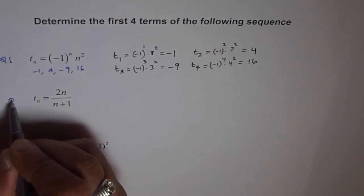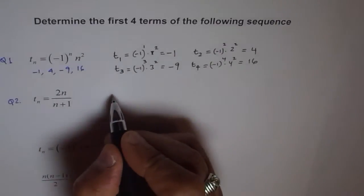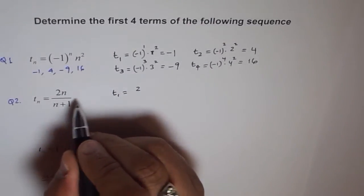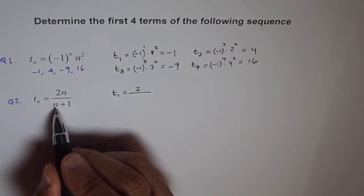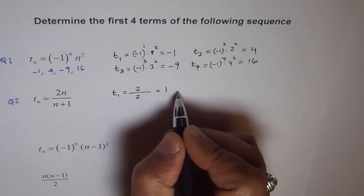Let's do question 2 now. It says tn is 2n over n plus 1. So, what is t1 equals to? t1 equals to 2 times 1 which is 2 over 1 plus 1 which is 2 and that gives me 1. So, t1 is 1.